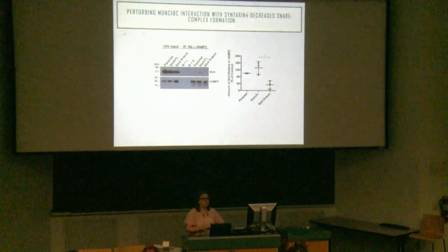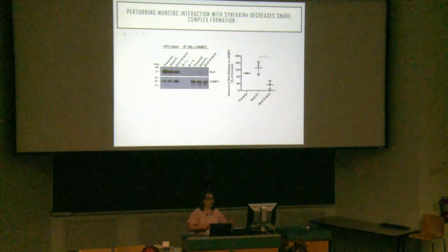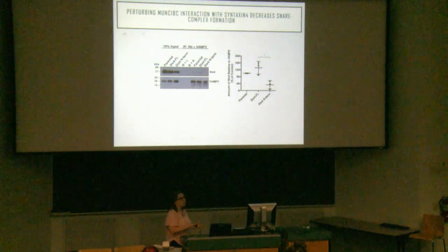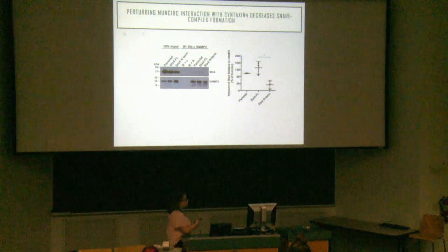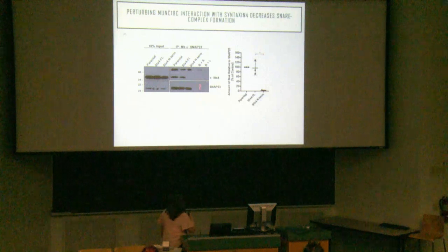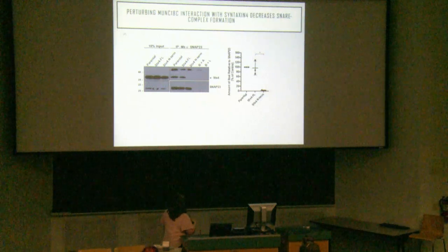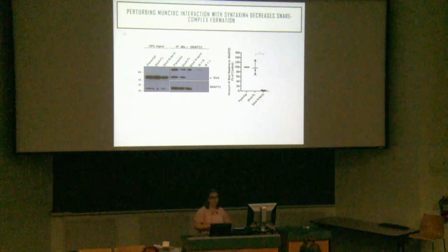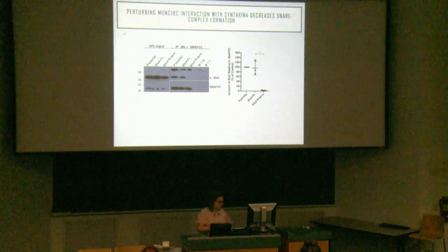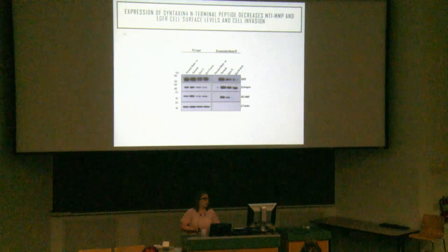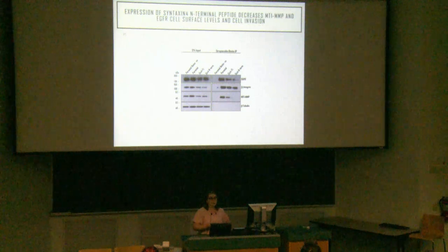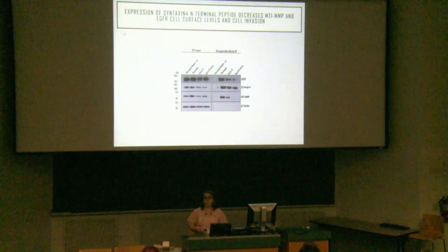We wanted to see if perturbing the MUNC18C interaction with Syntaxin-4 affected SNARE complex formation. I immunoprecipitated VAMP-2 in the Syntaxin-4 N-terminal peptide cells and observed a decrease in VAMP-2 co-IPing with Syntaxin-4. The same phenotype was seen with SNAP-23, indicating that MUNC18C interaction with Syntaxin-4 is required for SNARE complex formation. Expressing this N-terminal peptide also decreases invadipodia formation and cell invasion.